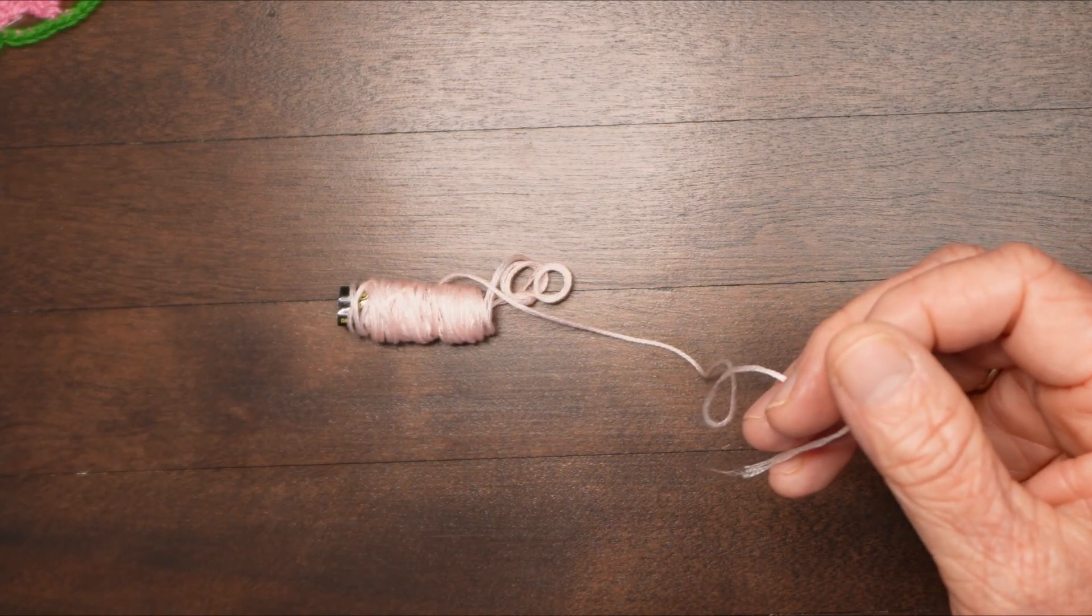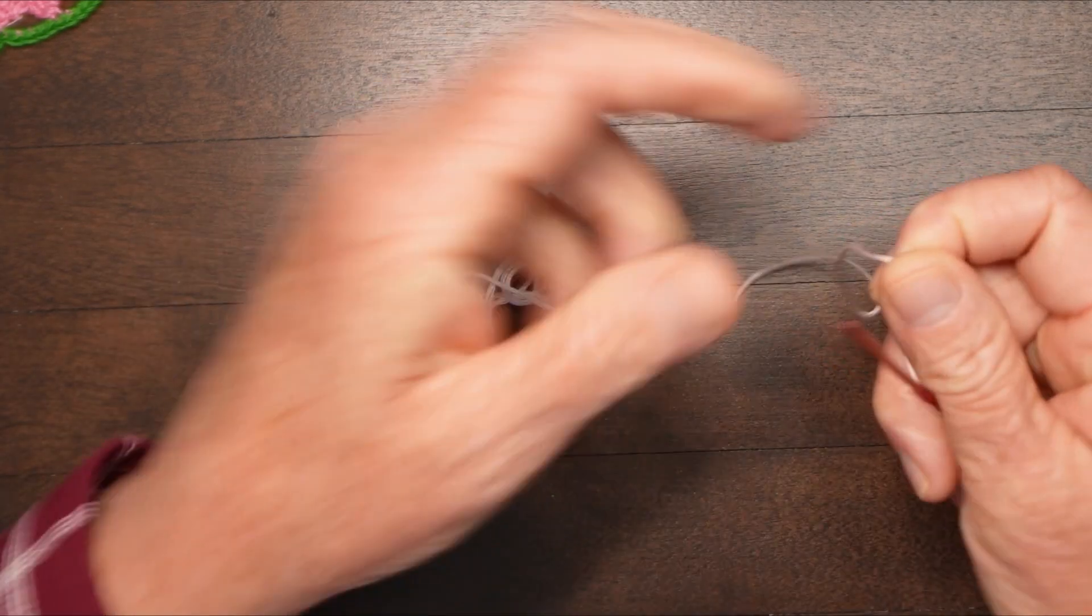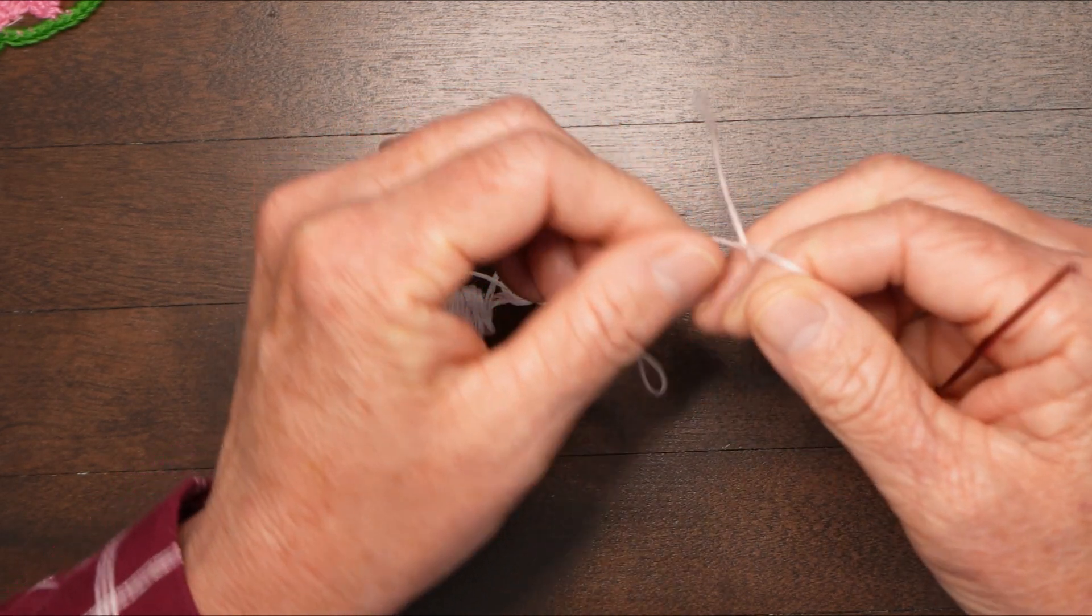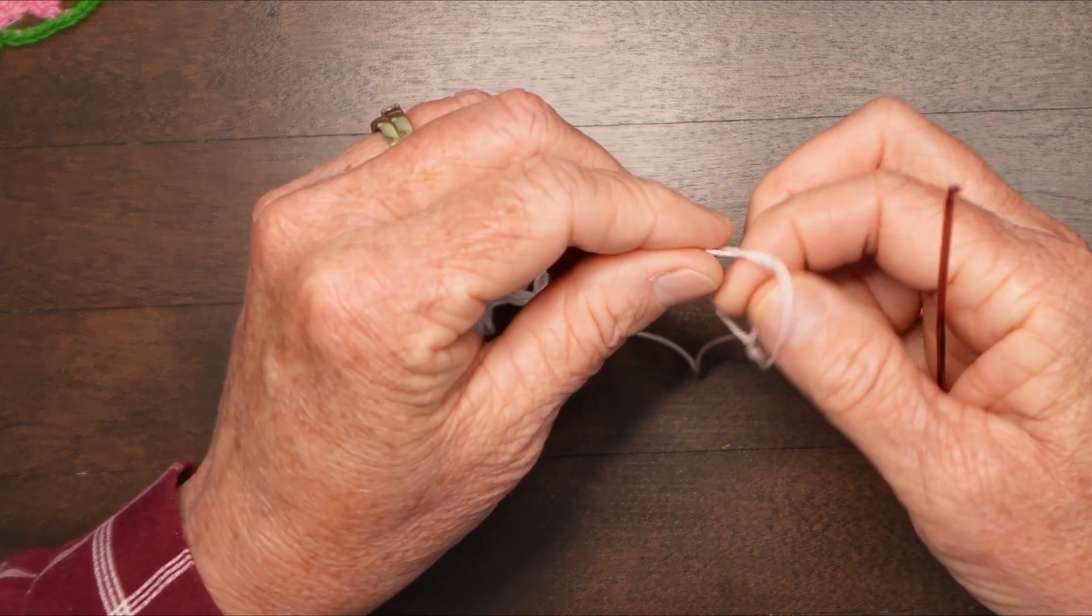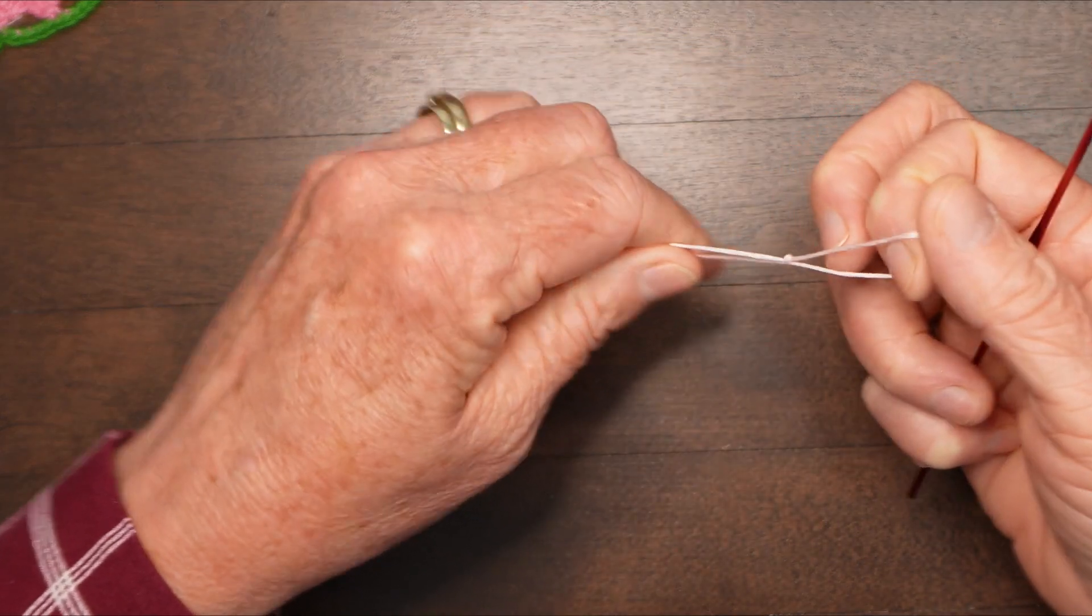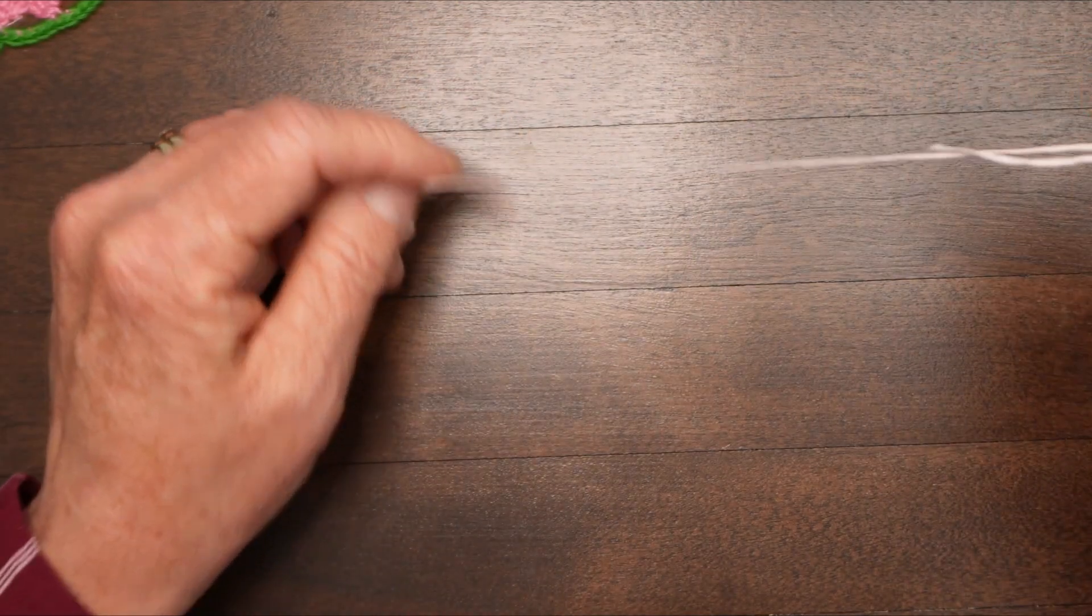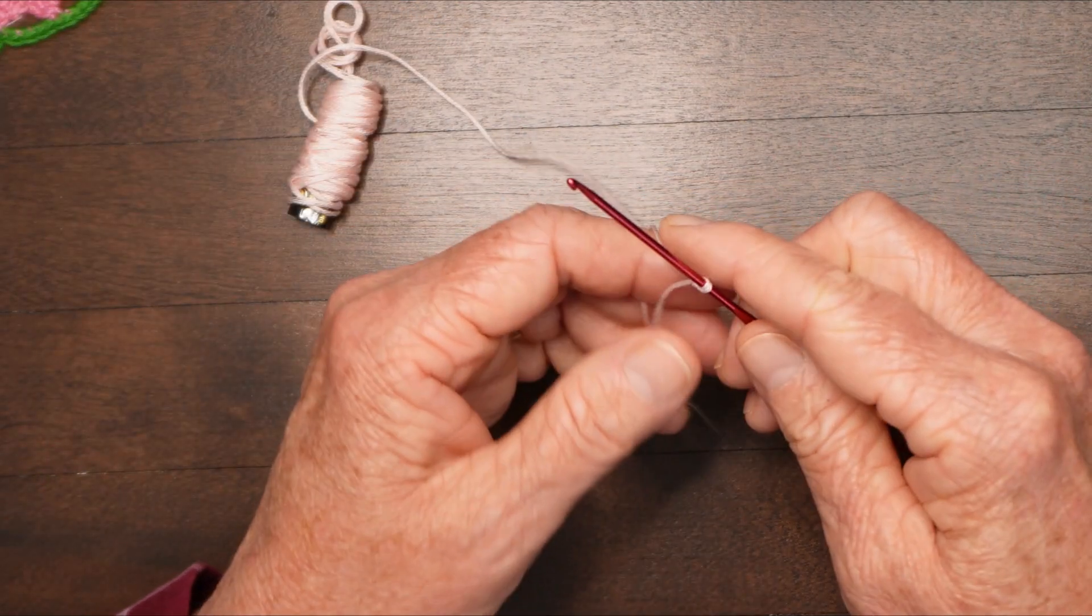For this headband you will need four skeins of embroidery floss, and the color options are endless. I picked up this floss for 10 cents a skein on clearance, so it's less than 50 cents for the headband and a couple hours to make it. It's just a great little project.